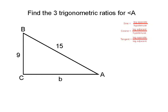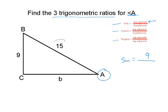Let's do one example — do this one with me. It says: find the three trigonometric ratios for angle A. We're going to find the sine, cosine, and tangent of angle A. You can abbreviate sine as S-I-N. We need the leg that's opposite to angle A. The opposite leg is 9. The hypotenuse is always the long side of the triangle — that's 15. Notice we can divide both by three, so our sine is 3 over 5.